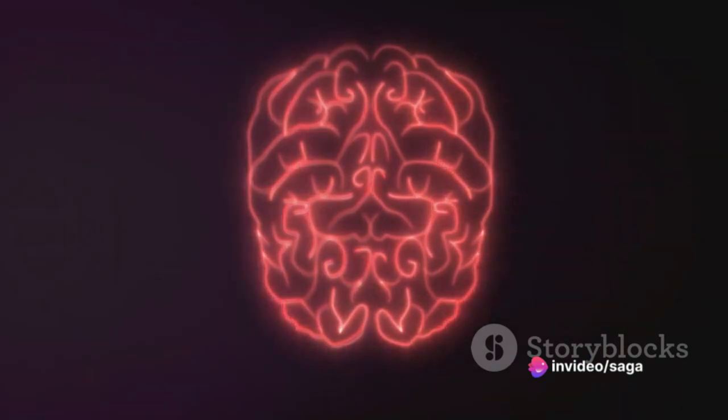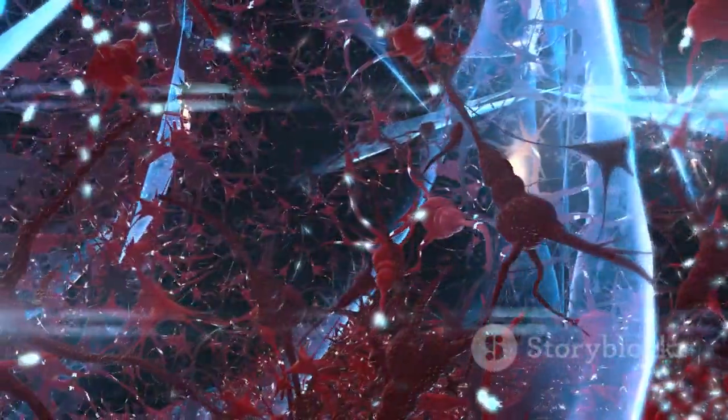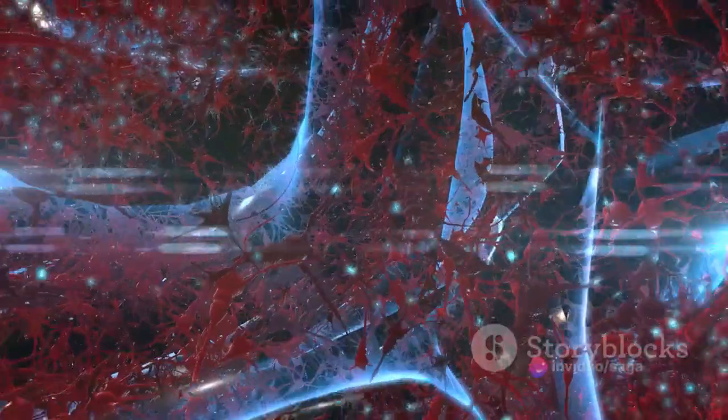Now these neurons are organized into layers within a neural network. There are typically three types of layers. The input layer is the first layer that receives the raw input data. Each neuron in this layer corresponds to a feature or element of the input data.